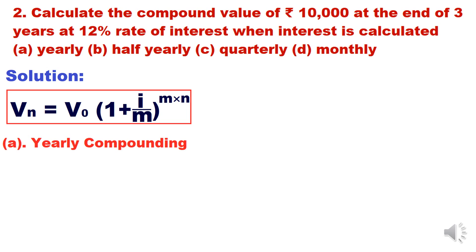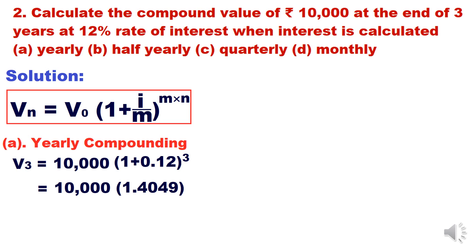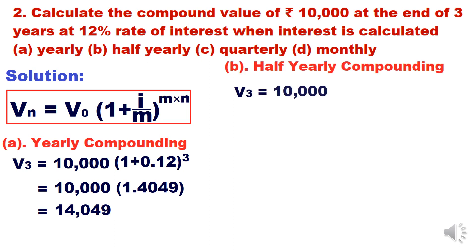Simplifying: (1.12)^3 = 1.4049, so the answer is 10,000 × 1.4049 = ₹14,049. This is the annual compounding answer. Now for half-yearly compounding: V3 = 10,000 × (1 + 0.12/2)^(2×3). The denominator is 2 because compounding occurs twice a year — every six months.